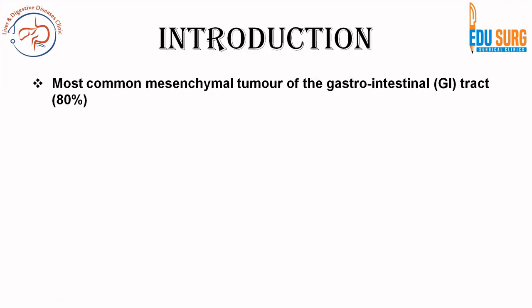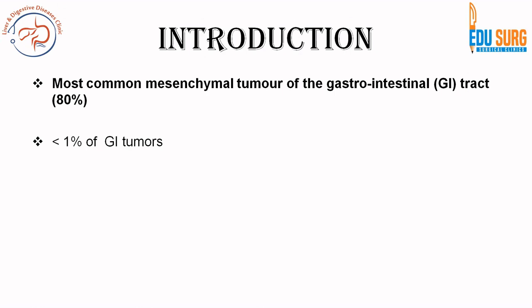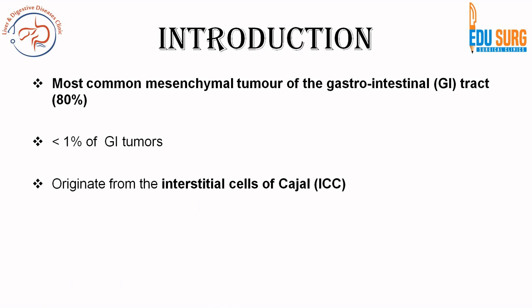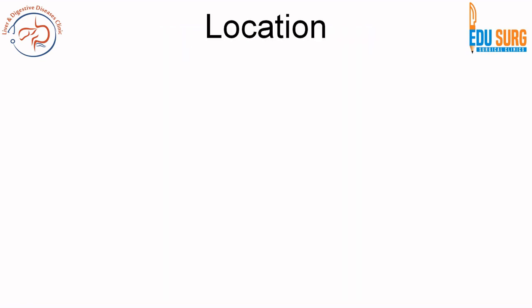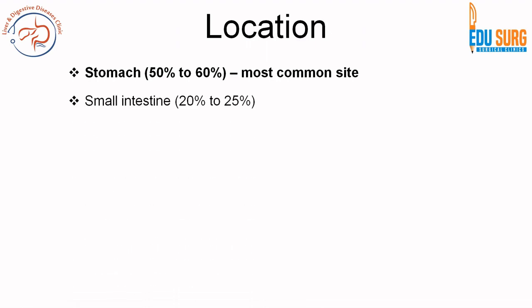GIST is the most common mesenchymal tumour of the gastrointestinal tract, accounting for 80% of mesenchymal tumours. However, overall in GI tumours it accounts for less than 1%. It originates from the interstitial cells of Cajal (ICC) — a very commonly asked question. As far as location is concerned, the stomach is the most common site, followed by small intestine and then rectum.